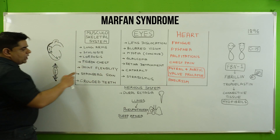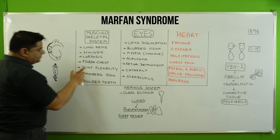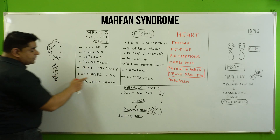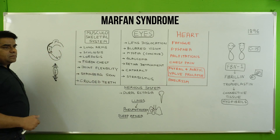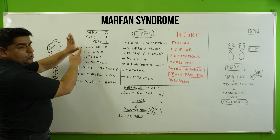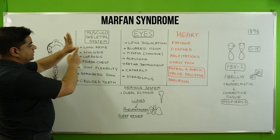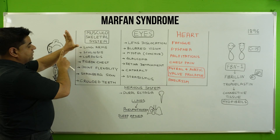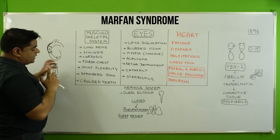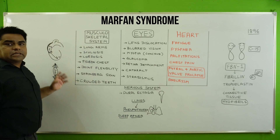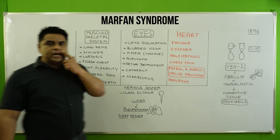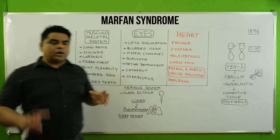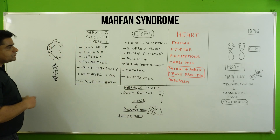Joint flexibility can be very much increased or can also be decreased. Under the Steinberg sign, the patient is able to fold the thumb backwards to a remarkable degree. There is also crowding of teeth, where two or three teeth are located at one point.